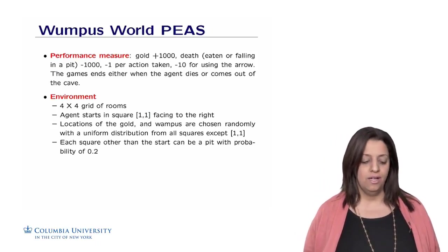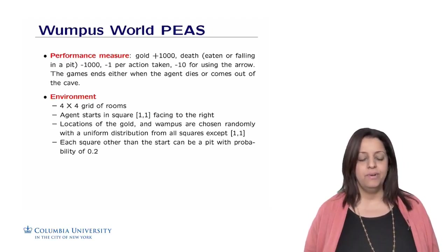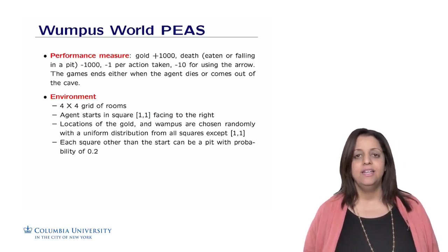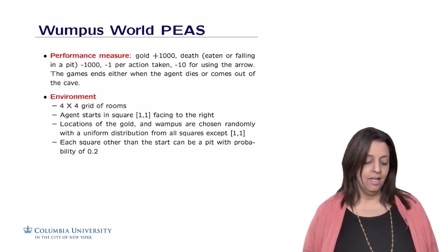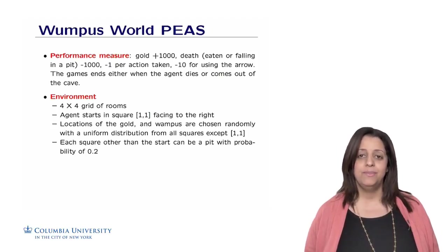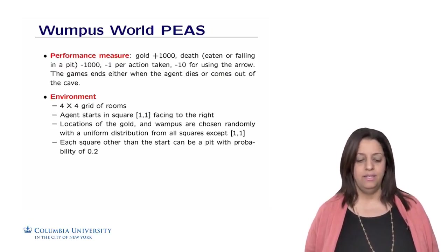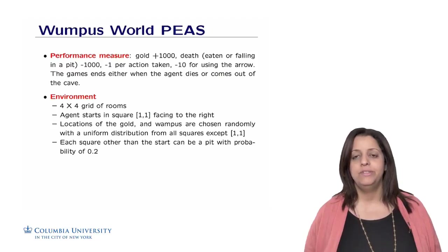The game ends either when the agent dies or comes out with the gold. The environment is a 4 by 4 grid of rooms. The agent starts in the bottom left room, that's room 1,1, facing to the right. Locations of the gold and the Wumpus are chosen randomly with a uniform distribution from all squares except the start square 1,1. Each square other than the start can be a pit with probability of 0.2.